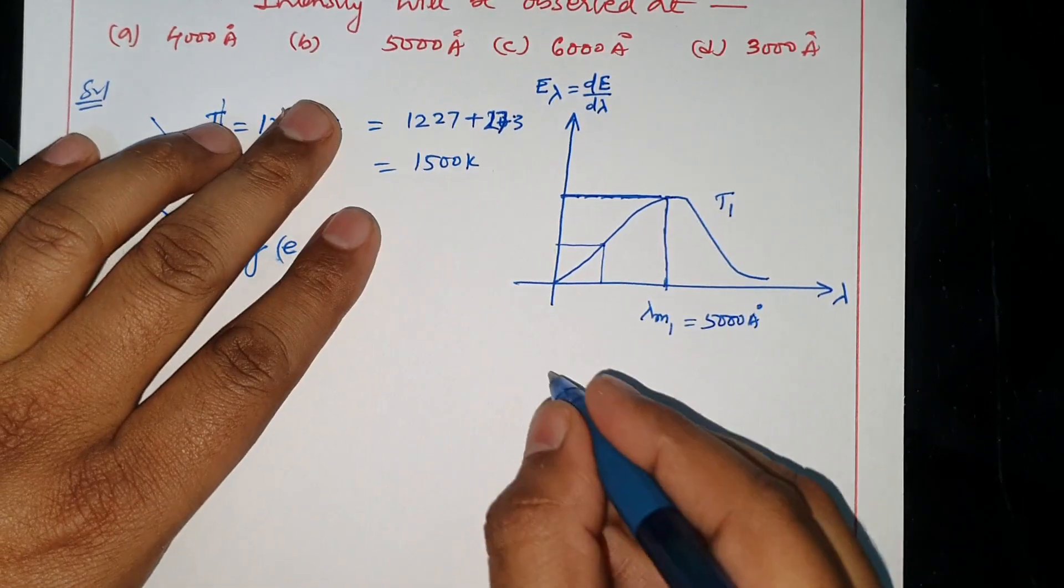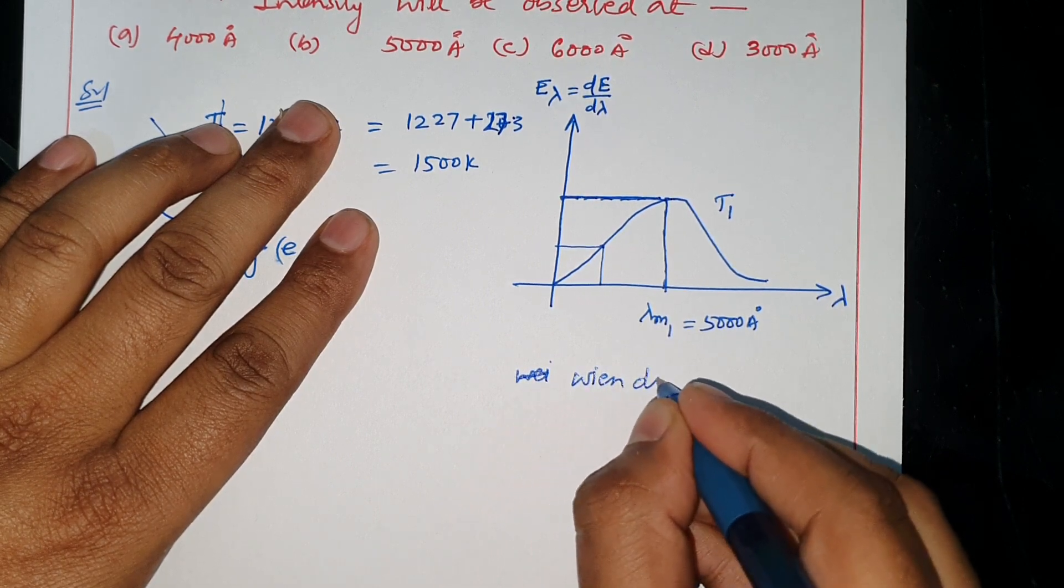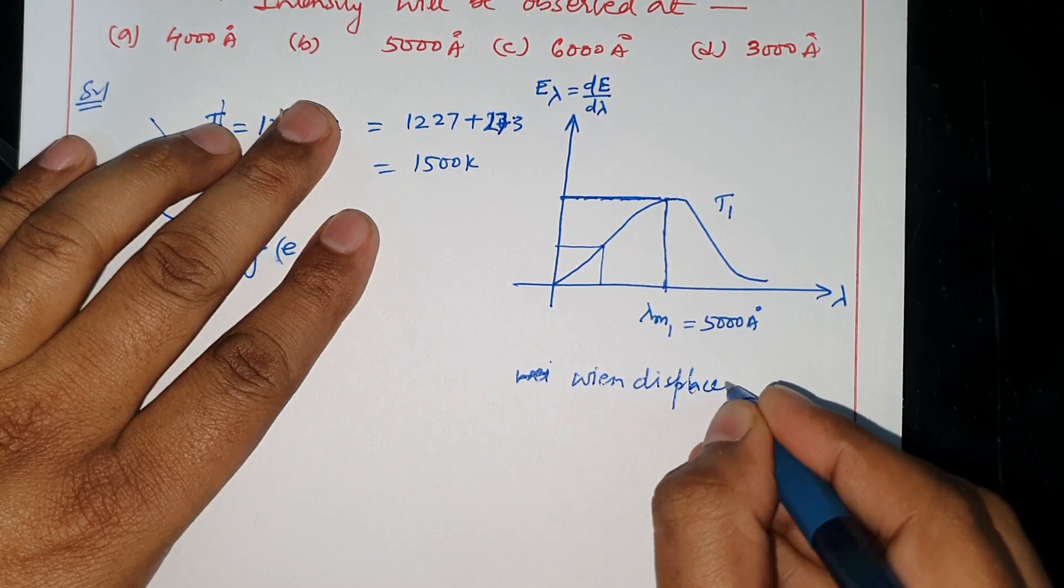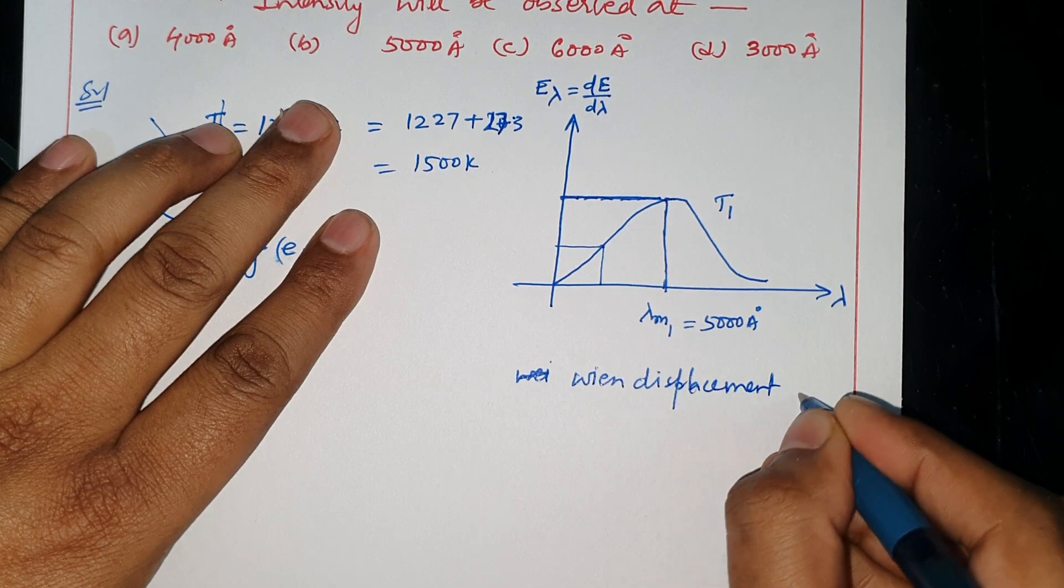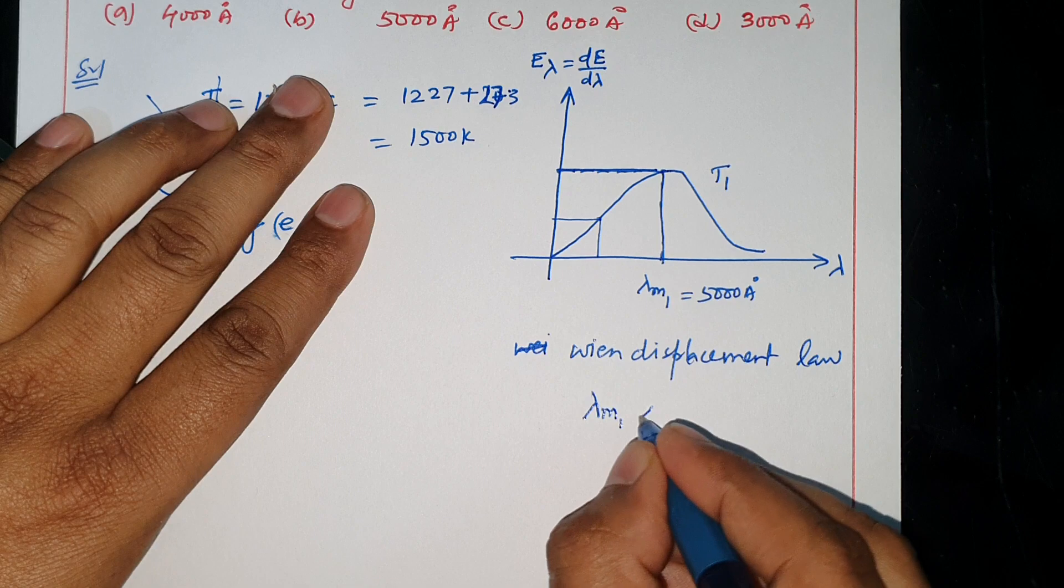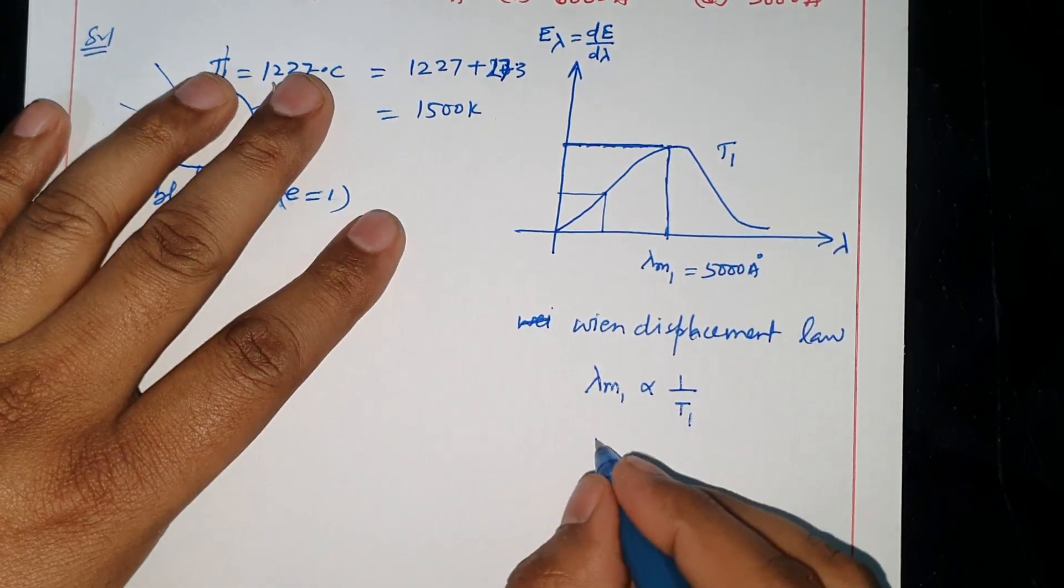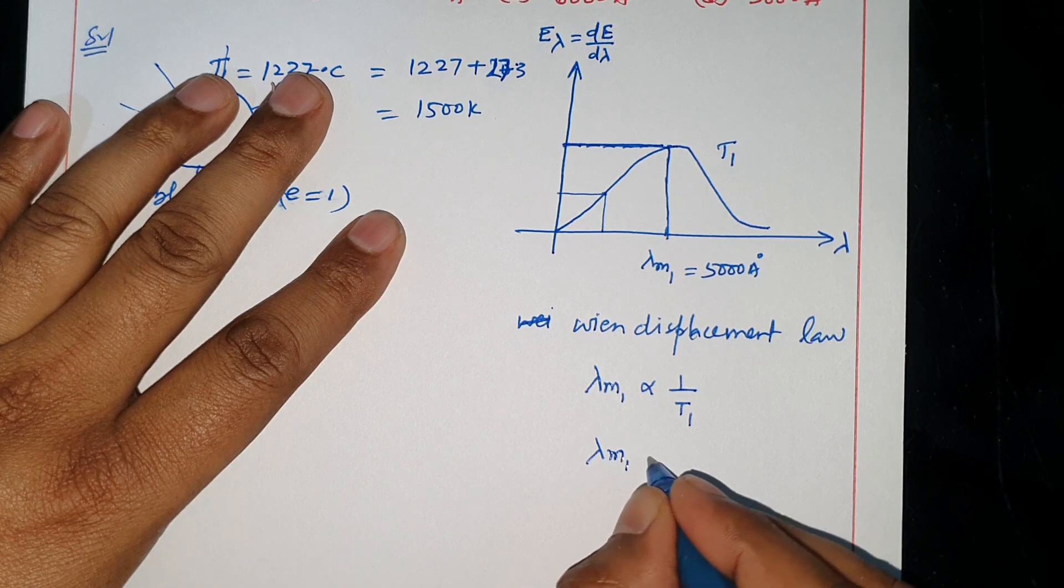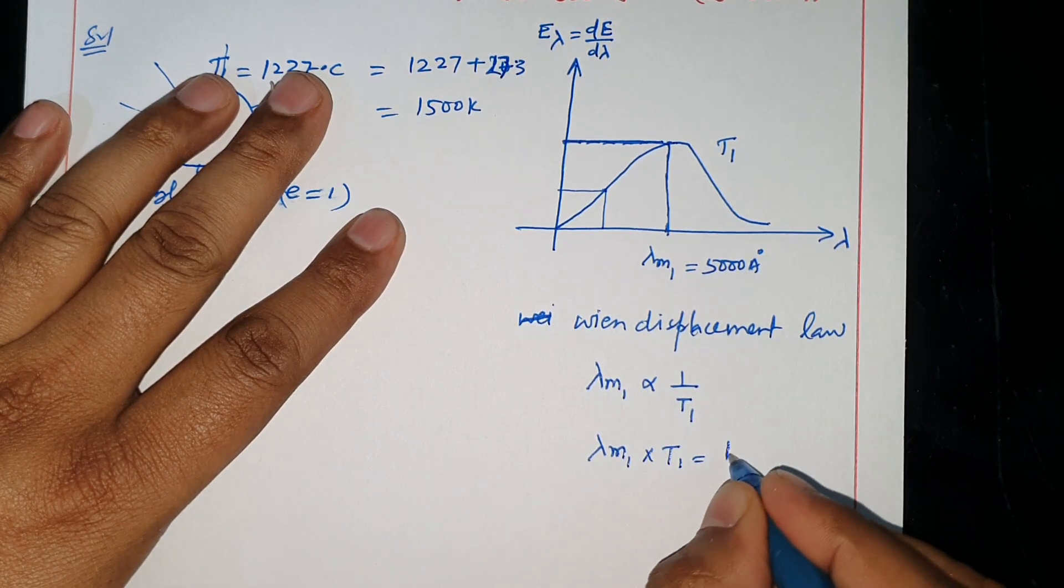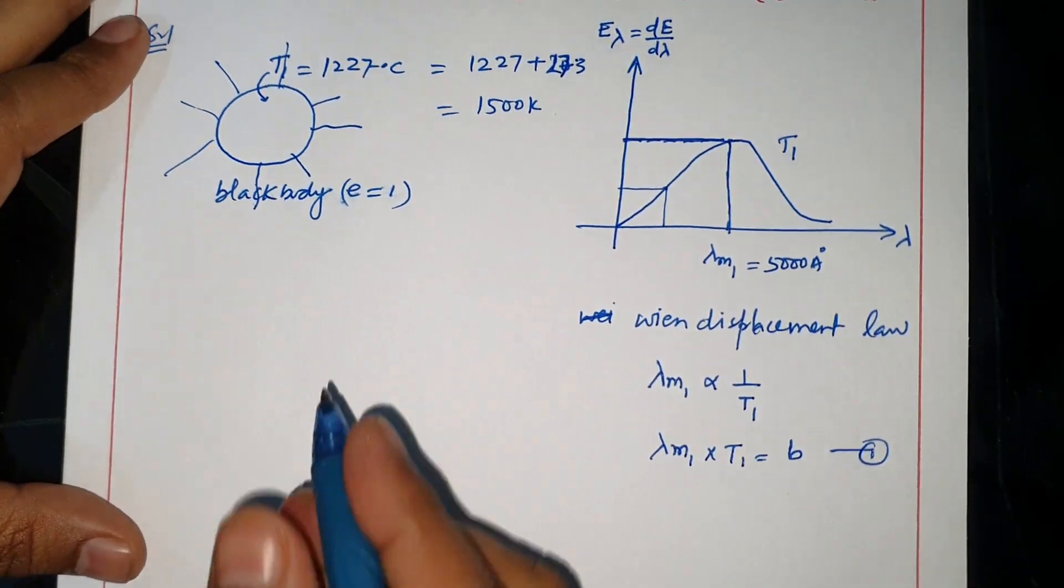Then, Wien's displacement law states: lambda M is proportional to 1 upon T. Therefore, lambda M times T equals constant. So lambda M1 times T1 equals constant. This is the first case. What is the second case?